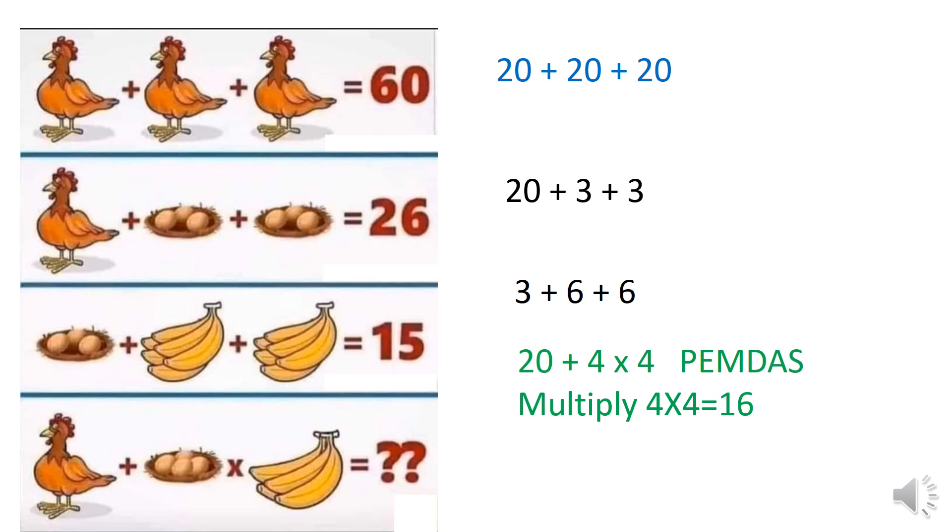And the next order of operation is addition, so we got 16 plus the 20 from the chicken will give us a total answer of 36.